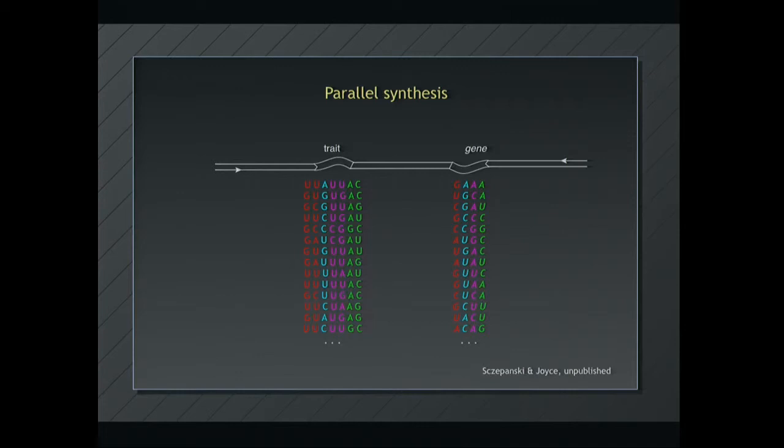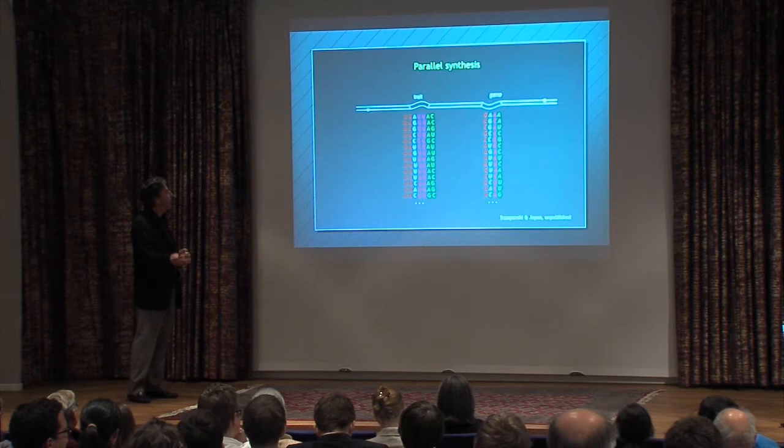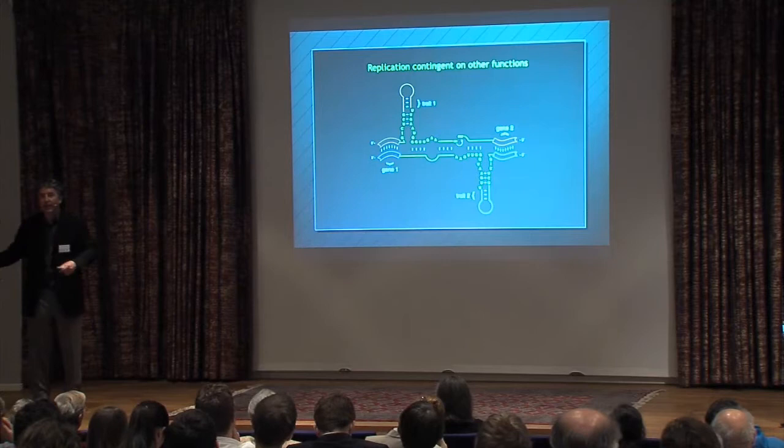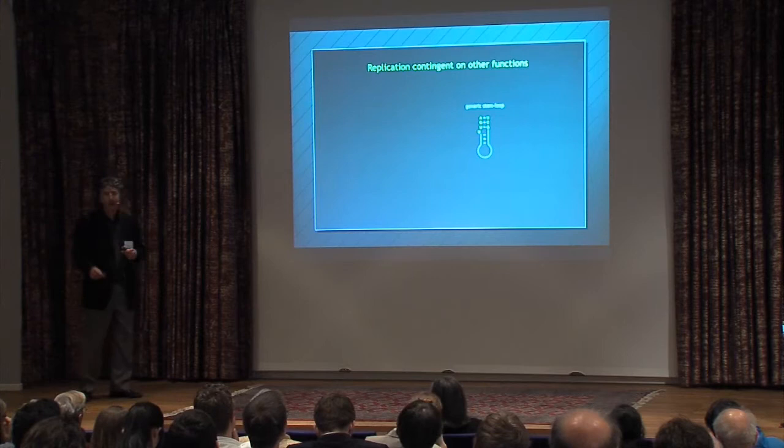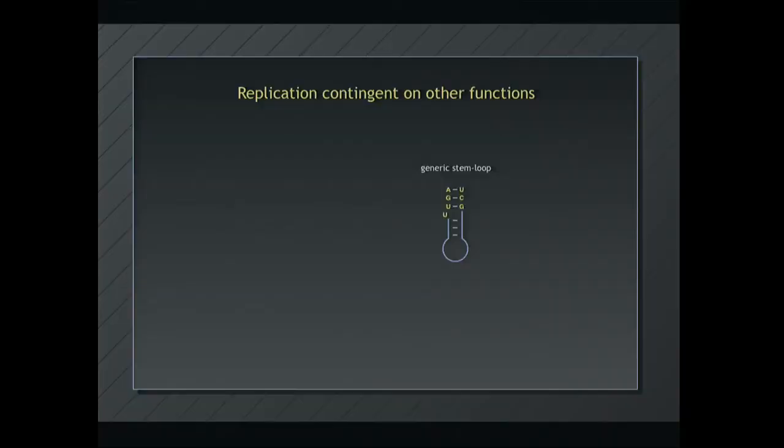So in the time that remains, and I'm supposed to end at 2:14 is what it says on the schedule. In the time, maybe I get to 2:15? I have one extra minute. So let me say the kind of things we want to go hunting for using this synthetic genetics. We want to make replication contingent on the execution of other functions, beside replication itself. And the idea is, there's another part of the molecule, this central stem, that's generic. So we're using the left stem for one of the genes encoding trait. We're using the right arm for the other gene encoding trait, but we've got the central stem that's generic. And so this is the place we can put alternative function.